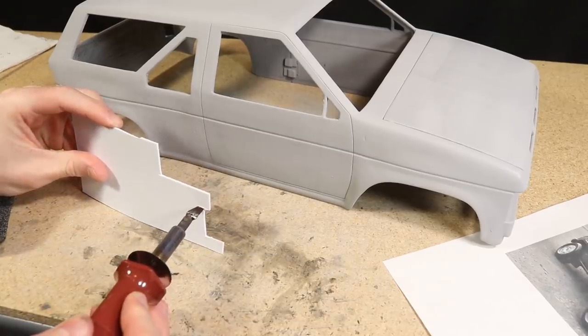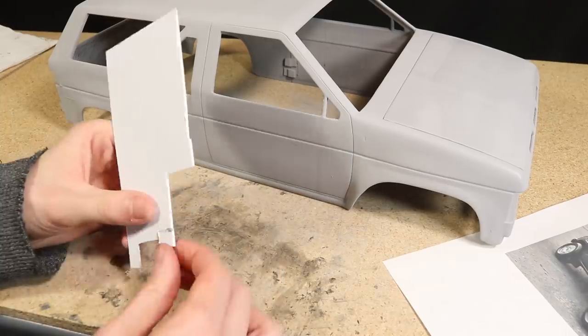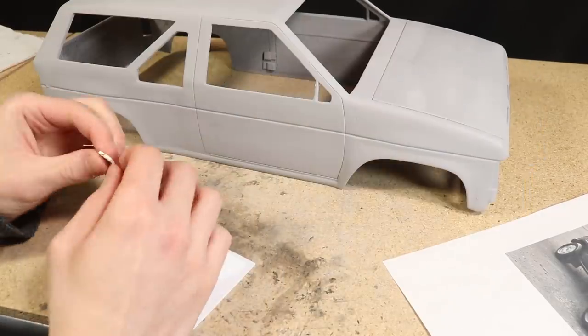Using a reference image as a guide, I simply cut and sanded some small pieces of styrene to be the handles for both the doors and the rear tailgate.